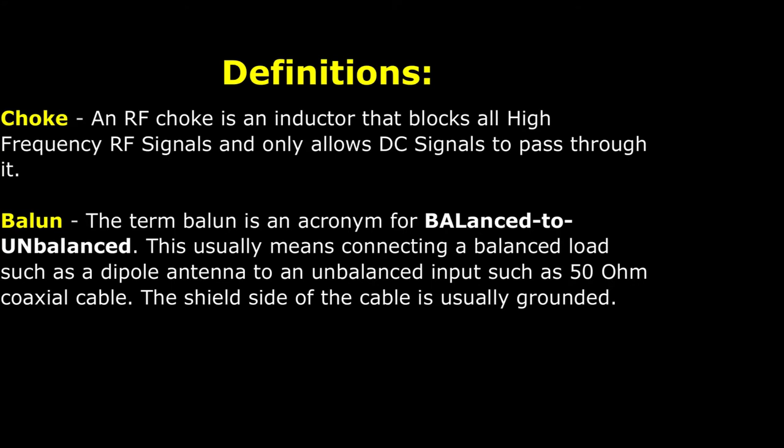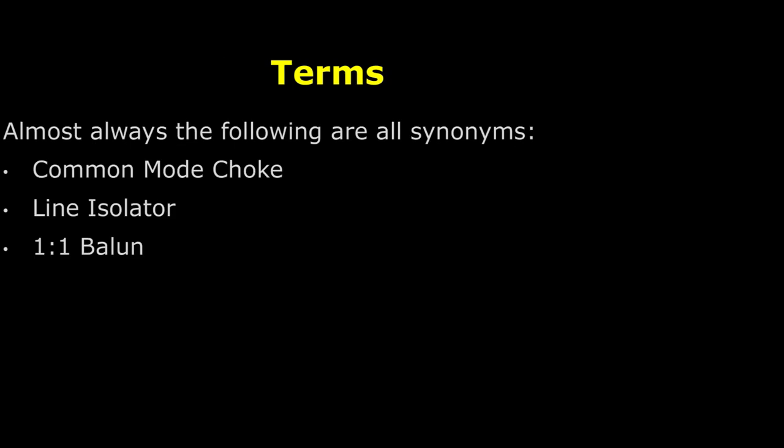We wanted to include a few definitions. A choke is an inductor that blocks all high frequency RF signals and only allows DC signals to pass through it. A balun is an acronym for balanced to unbalanced. It usually means connecting a balanced load such as a dipole antenna to an unbalanced input such as a 50 ohm coax cable. The shield side of the cable is usually grounded. A couple of terms that we want to mention that are almost always synonyms: a common mode choke, a line isolator, or a 1 to 1 balun. Almost always you can use these terms interchangeably.